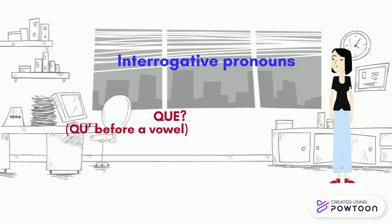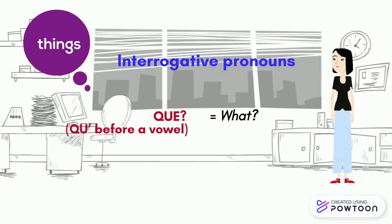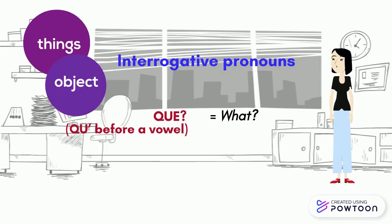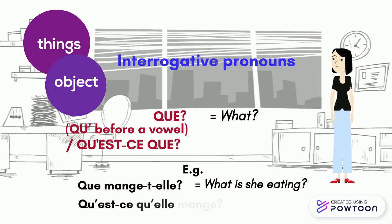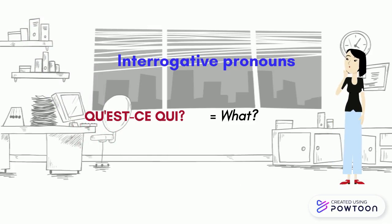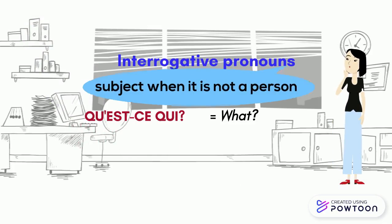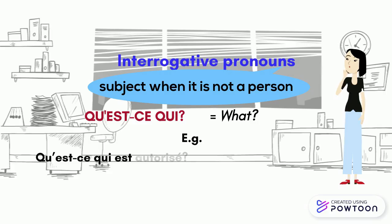Que, or Q-apostrophe before a vowel, means « what ». It refers to things used as grammatical objects. For instance, Que mange-t-elle? — What is she eating? You can also say Qu'est-ce qu'elle mange? The form Qu'est-ce qui is used to refer to a subject when it's not a person. For instance, Qu'est-ce qui est autorisé? — What is allowed?